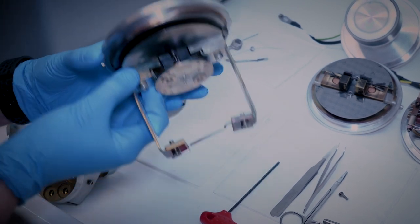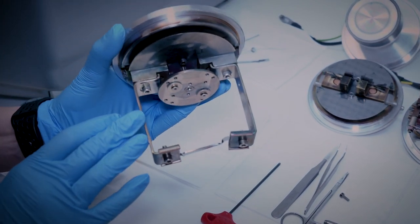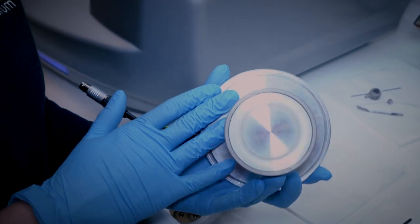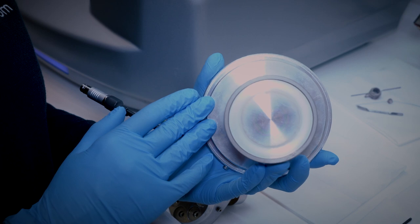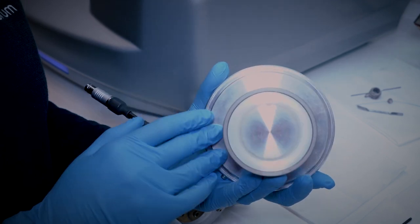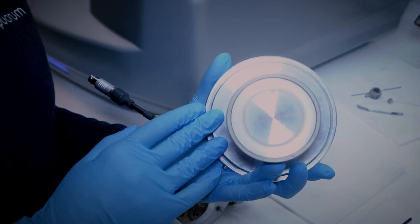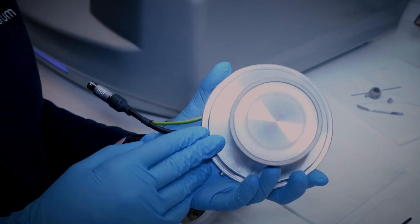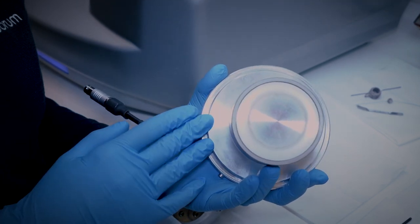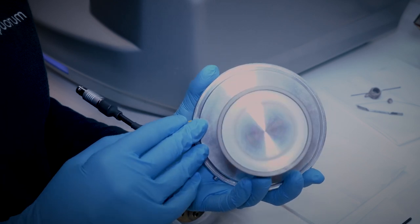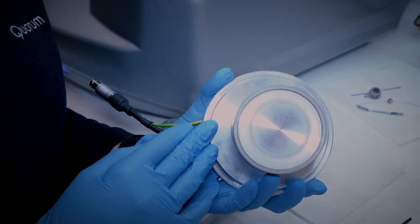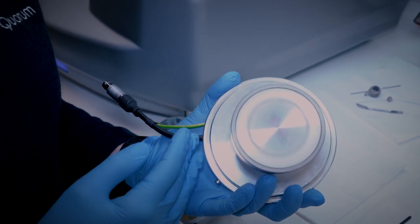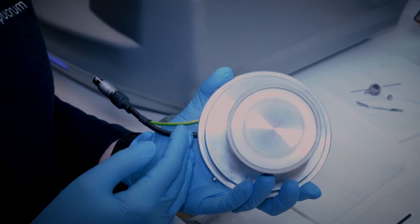So this head is for thermal evaporation of metals and it works really nice. This is our last head, this is plasma cleaning and glow discharge head with which you can either etch surfaces or glow discharge and this process is for making surfaces clean and hydrophilic.